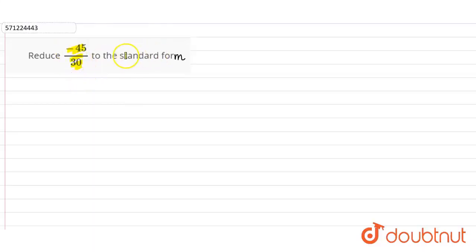So we have to reduce -45 divided by 30 to the standard form. We have to reduce -45 divided by 30 to the lowest form, right?